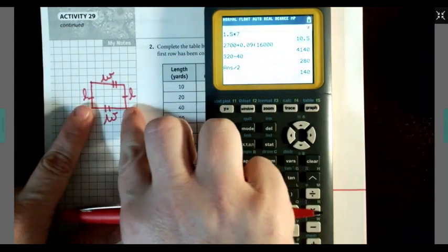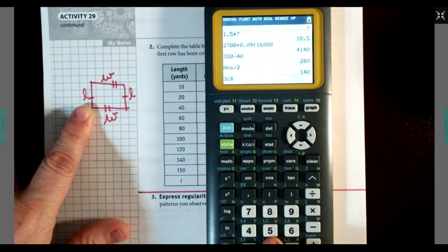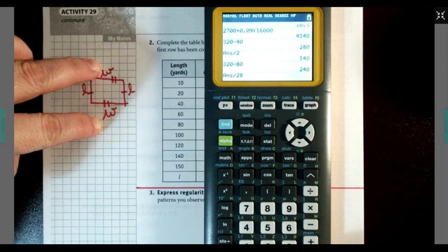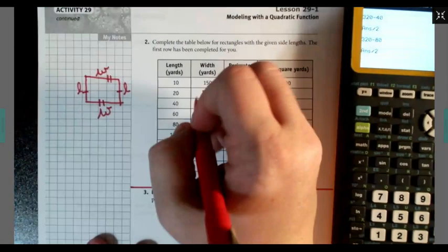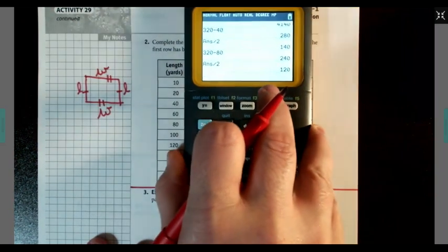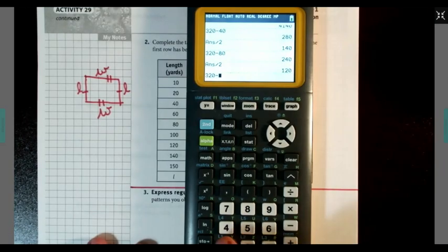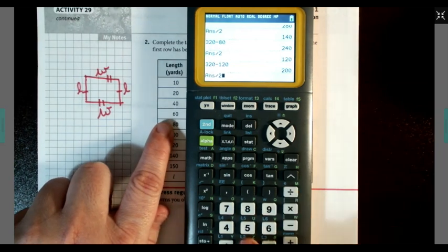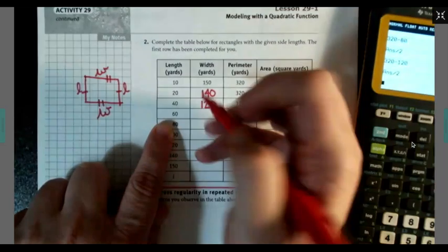We have 40 and 40 which is 80. So we'll get 320 minus 80. And remember that these are equal. So we're going to divide by 2 and get 120. So we're going to do 320 minus 120 because 60 and 60 is 120. Divided by 2 gives me 100.